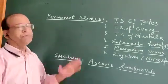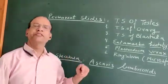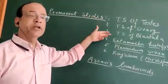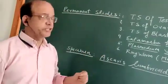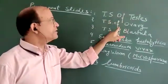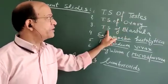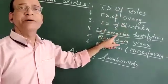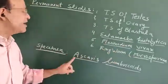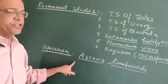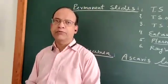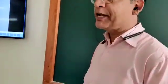Today I am here to show you some permanent slides of reproduction and pathogens. These slides are transverse section of testis, transverse section of ovary, transverse section of blastula, Entamoeba histolytica, Plasmodium vivax, ringworm, and the specimen of Ascaris. So first I am showing you the permanent slide of transverse section of testis.